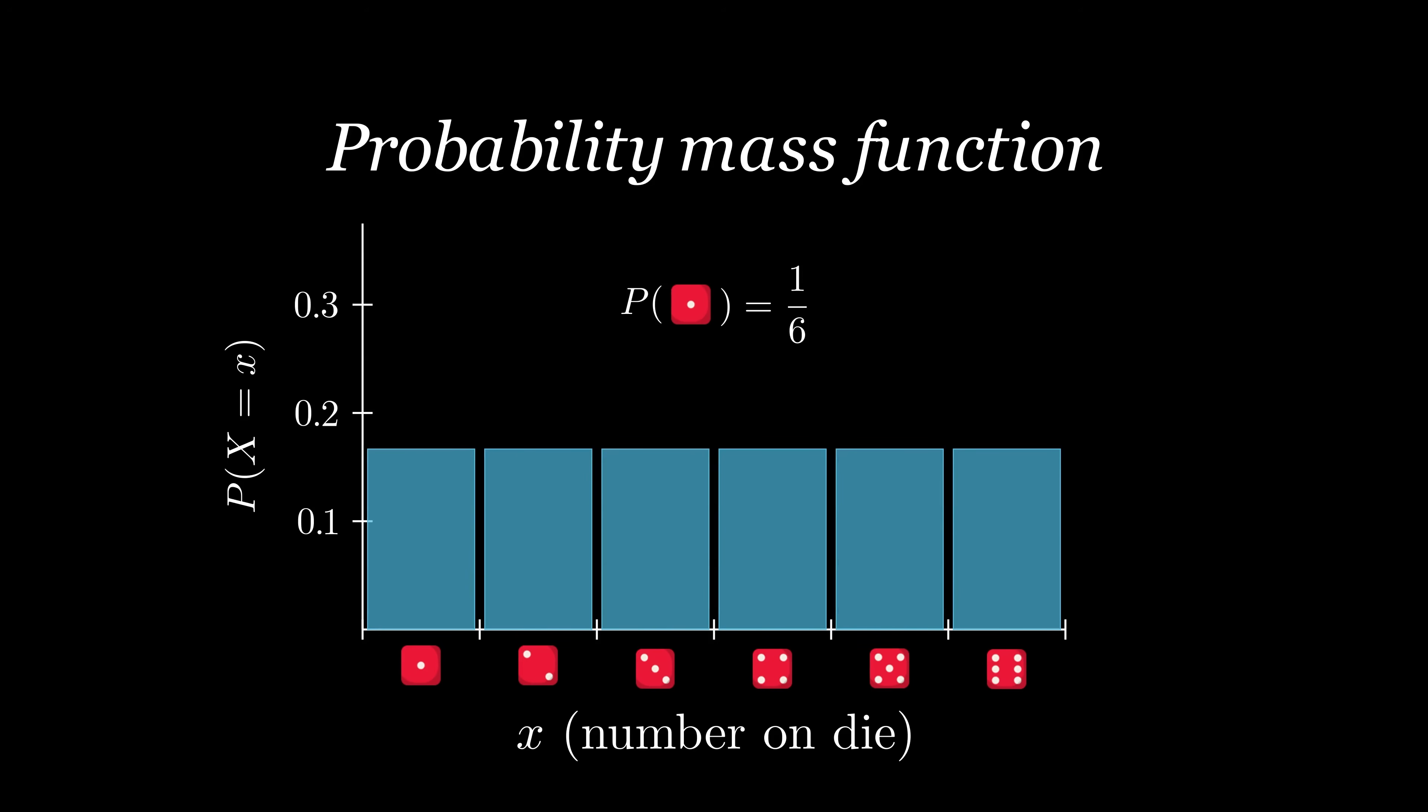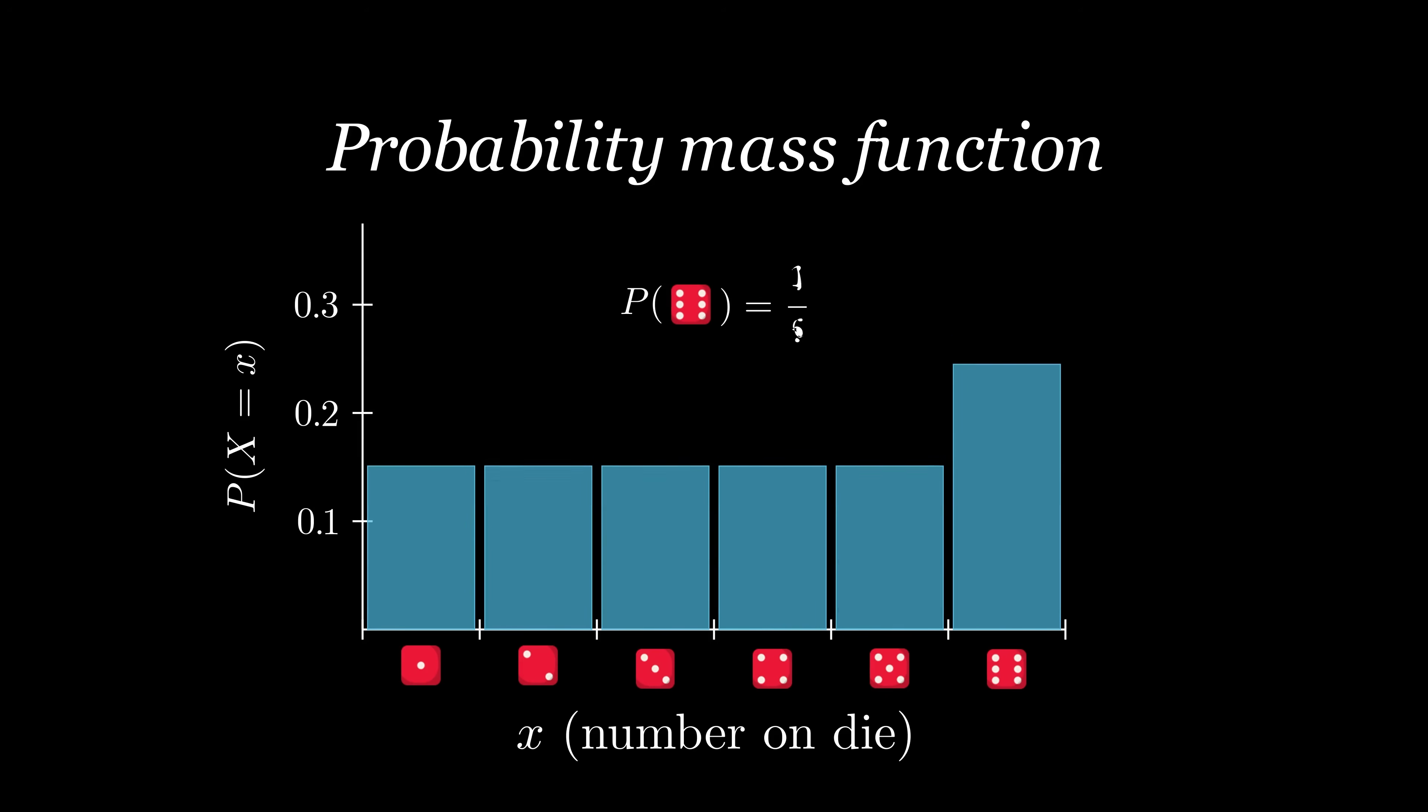You can think of these probabilities as weights of each outcome occurring, hence the term mass. If the die is fair, each outcome is weighted equally. But if the die is weighted so that six has a greater chance of coming up, then our probability mass function would look a bit different.